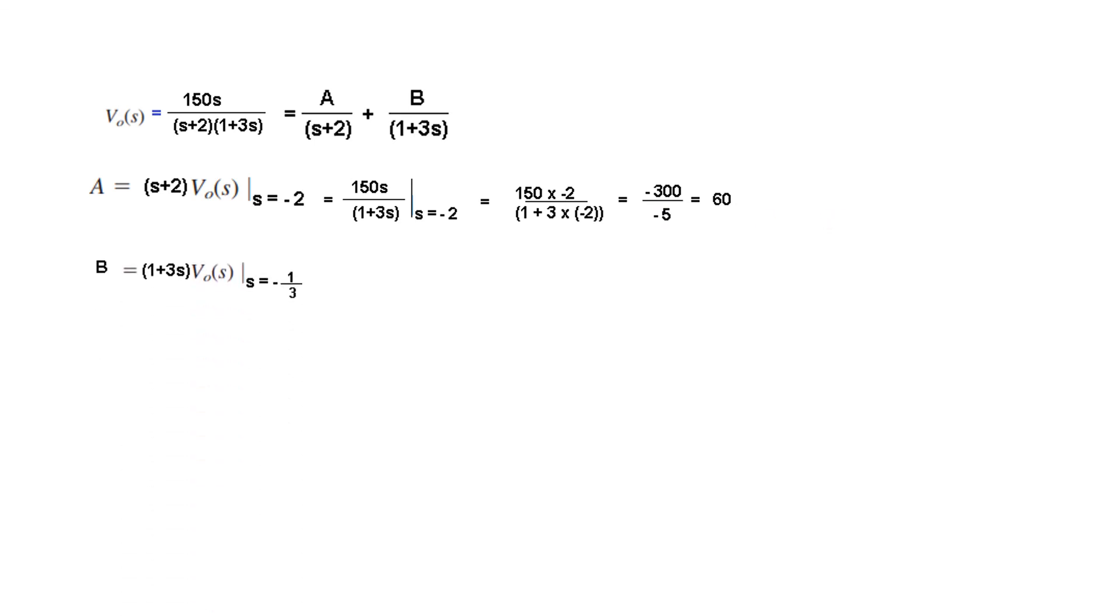Similarly for B, we multiply by B, we multiply by the denominator of B, 1 plus 3S into VS and now 1 plus, this term will get cancelled from the denominator, so it will have 150S divided by S plus 2, condition now is S equal to minus 1 by 3 from here. Putting this equal to 0, putting this equal to 0, S will be minus 1 by 3 and putting the value and solving, we get final answer to be minus 30.